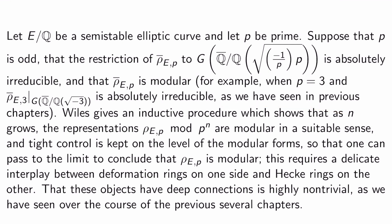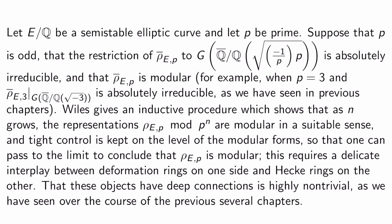This was kind of a chapter six thing. So what happens then is Wiles gives an inductive procedure which shows that as n grows, the representations rho E,p mod p^n are modular in a suitable sense and tight control is kept on the level of the corresponding modular forms so that one can essentially pass to the limit to conclude that rho E,p is modular. Now this requires a delicate interplay between deformation rings on one side and Hecke rings on the other. This is the kind of r equals t phenomenon. That these objects have deep connections is highly non-trivial as we've seen over the course of the previous several chapters.